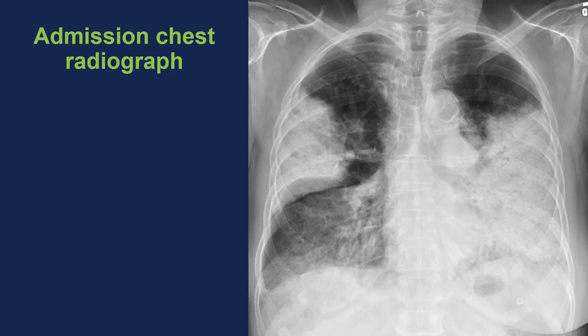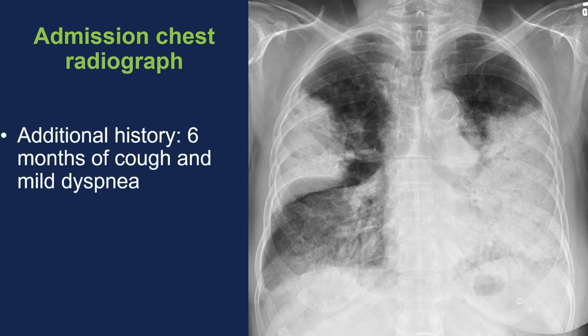She had an admission chest X-ray which surprisingly showed consolidation. Upon further investigation of her history, it turns out she did have a six-month history of cough and mild dyspnea. The chest X-ray shows consolidation which looks like a pneumonia statistically speaking, but her history was much more chronic — a six-month duration as opposed to a days or weeks duration.